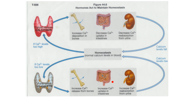We end up increasing calcium absorption from the intestines as well. Parathyroid hormone also goes to the kidney and says increase the reabsorption of calcium from the urine — so calcium that would be lost in urine is taken back up into the blood. All these actions cause calcium levels to increase.